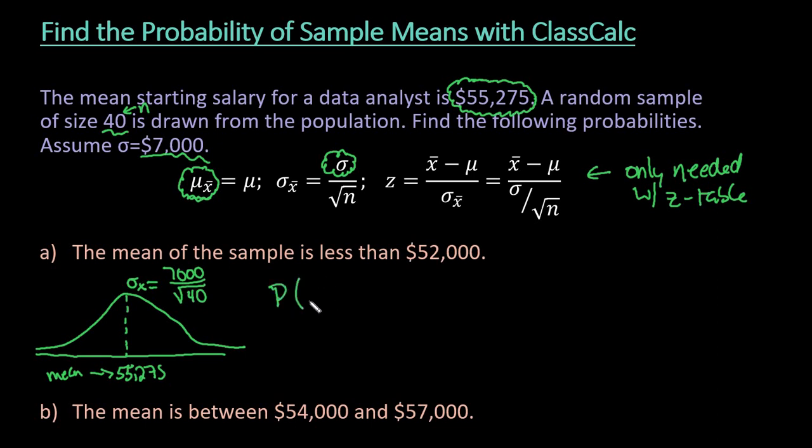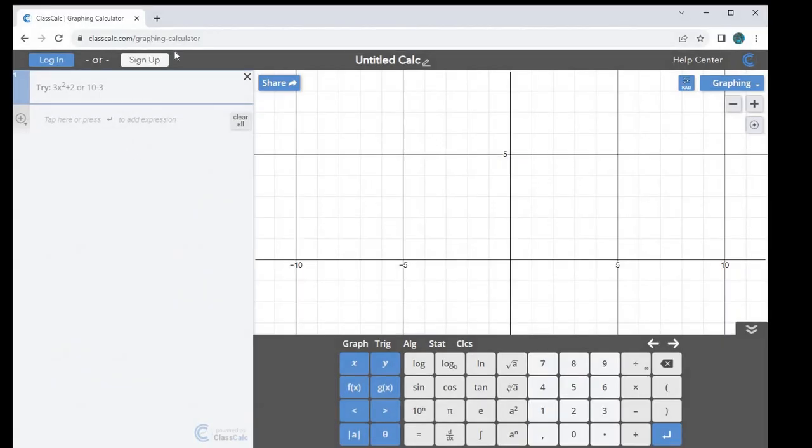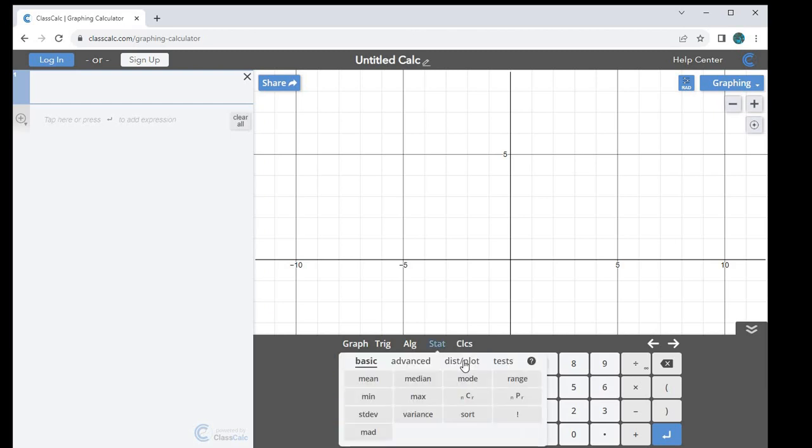So the first one, we're looking for the probability that the sample mean is less than $52,000. So $52,000 is going to be down here, so we're looking for a value down here that is less than that. So we would start at negative infinity, and we would stop shading at 52,000, so anything less than that. So let me grab the calculator. This is classcalc.com/graphing calculator is the URL, and there is a free download for your smartphone. It looks very similar, so you can also use this in your smartphone. So I'm going to hit stat, and I'm going to go to distribution plots, and I'm going to choose the normal distribution.